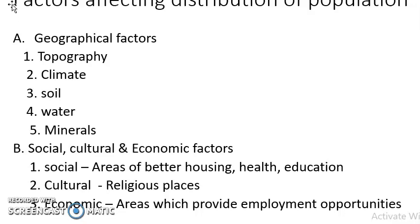Third important geographical factor is soil. Soil which is very fertile — people prefer to live in those places. The places which have fertile soil, people prefer to live because it is suitable for agriculture. Fertile plains, as we have discussed earlier — Ganga-Brahmaputra plains, which is the most fertile in India, and it is the most densely populated area. So this is one of the geographical factors which leads people to prefer to settle.